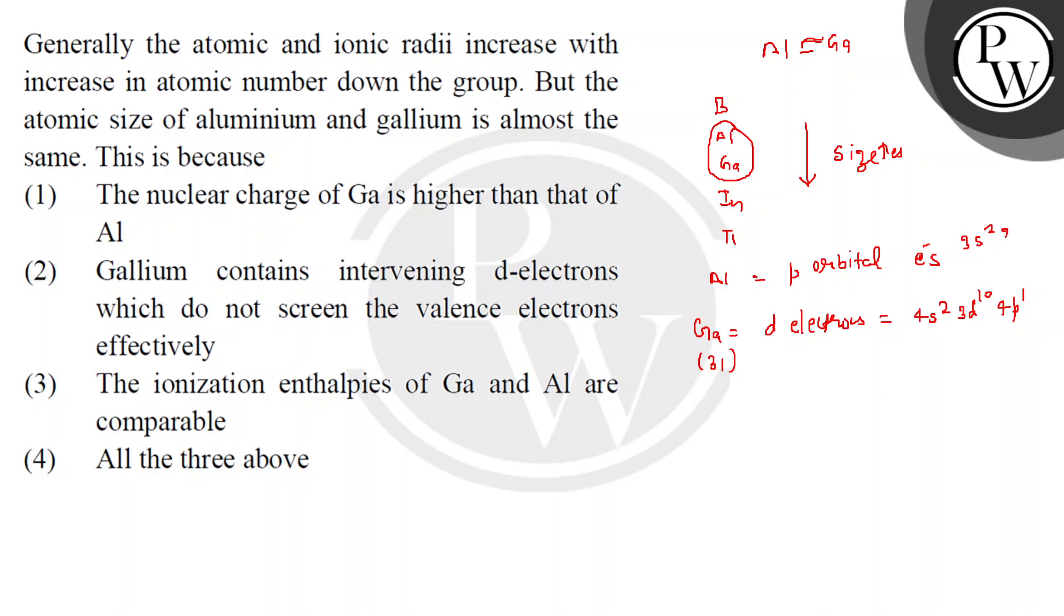What happens? Directly 3s2 3p1. So these are D electrons and their shielding power: S, P, D, F shielding power.